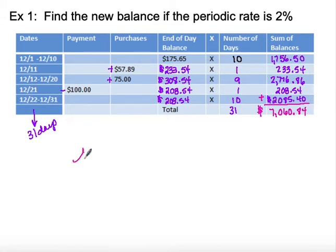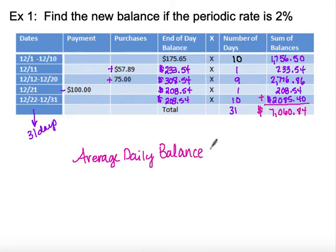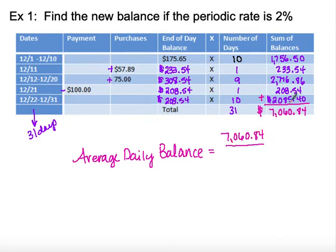Now we can calculate our average daily balance. It takes a little bit of prep work to figure this out. The average daily balance is the sum of all our daily balances divided by 31.